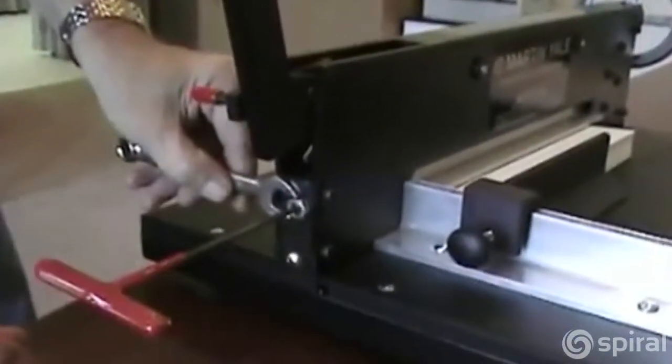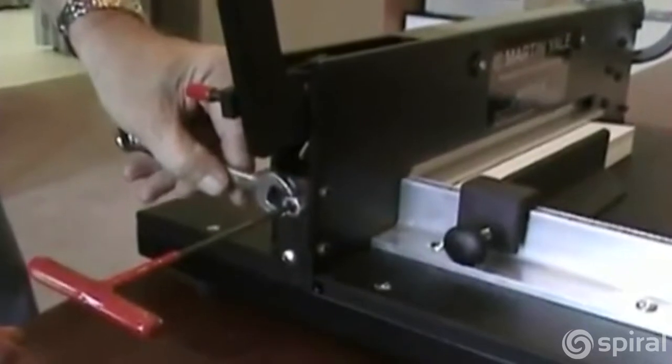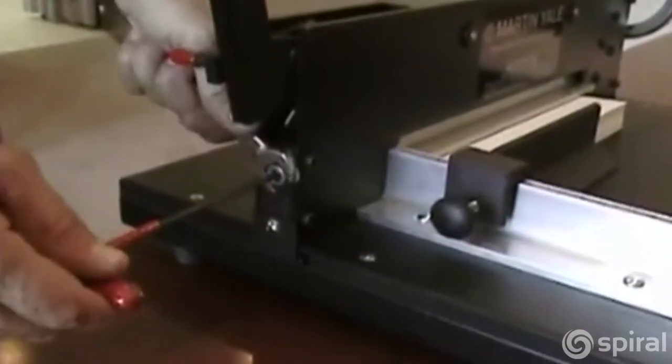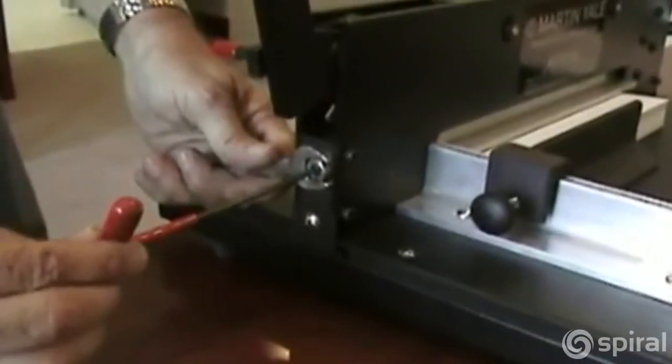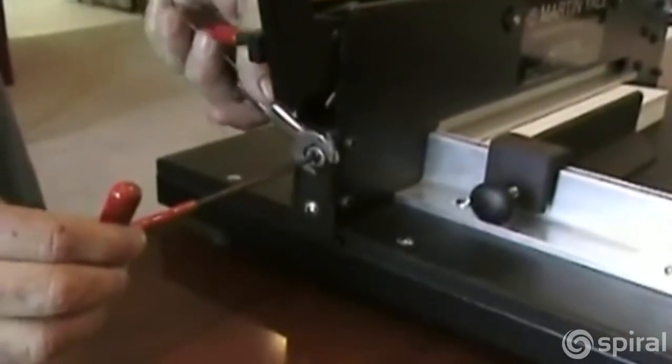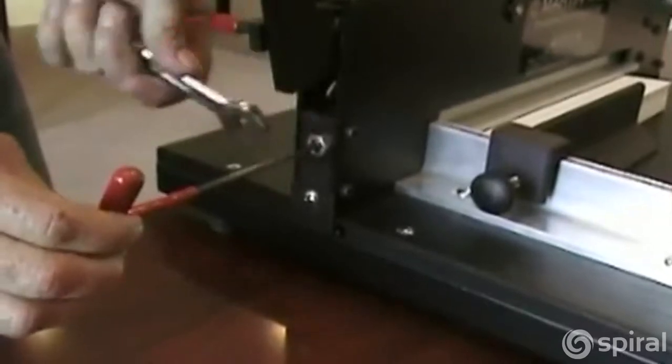Insert your hex key into the adjustable stop screw. Slightly loosen your lock nut. Turn the hex key approximately one eighth of a turn to start, and then lock your jam nut once again.